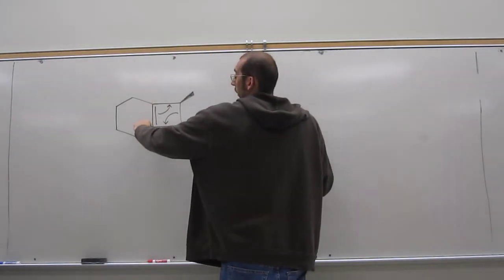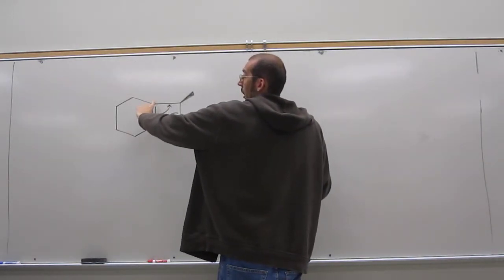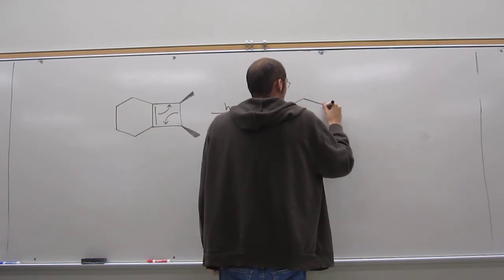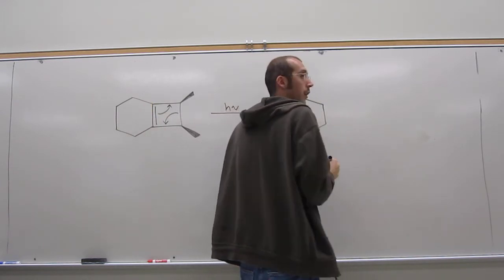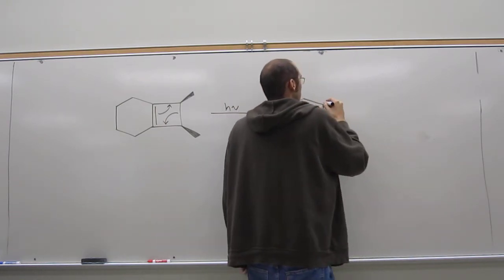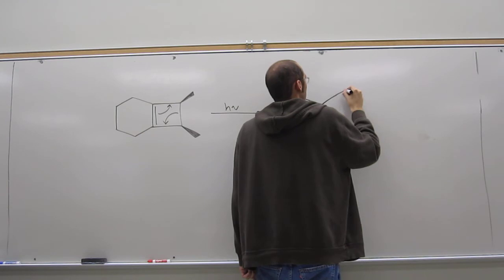So did we break this bond here, or is there still a bond there? Between those two rings, there's still a bond, right? We only broke that pi bond. But what did we make here? What type of compound?